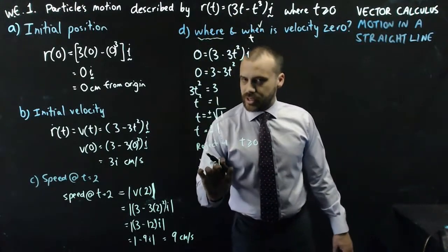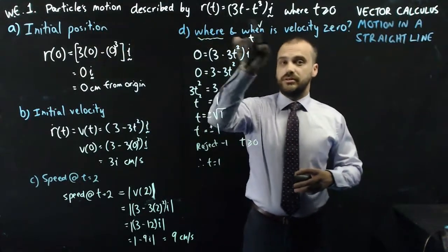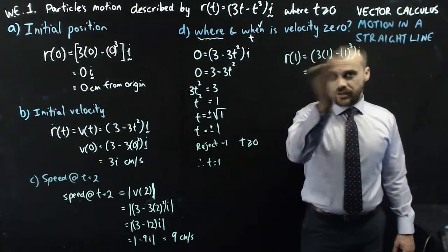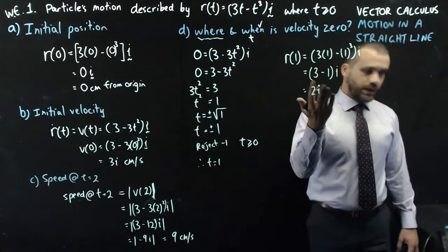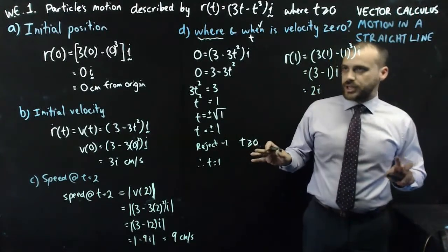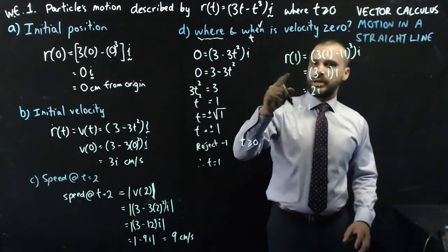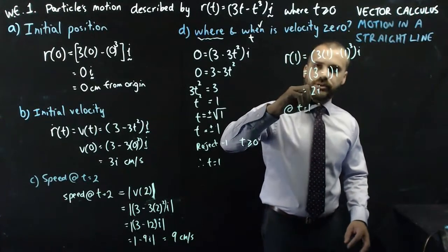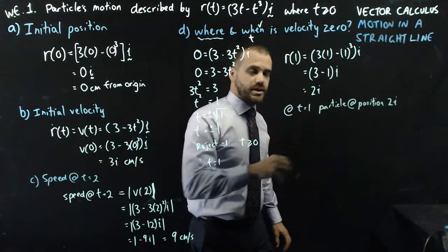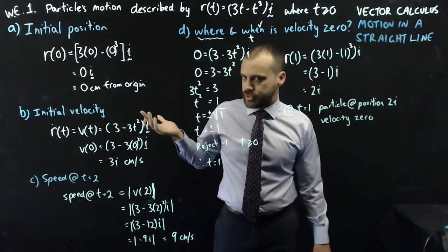So we can now sub t equals one into our where, which is our position vector function, a little bit like this. And then we just do some maths. There you go, 2i. So what can we finally say here? We can say at t equals one, particle at 2i, and its velocity is zero. And that about wraps up what I want to do with that question. Let's run through a whole different example.